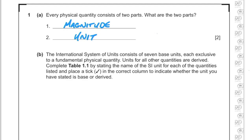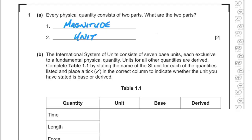The idea is that we have base units and derived units. For each quantity you state its unit and whether it's base or derived. Time is measured in seconds and it is one of the SI base units, so time is measured in seconds and it is a base unit — write the whole word 'seconds' just in case.